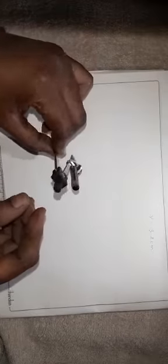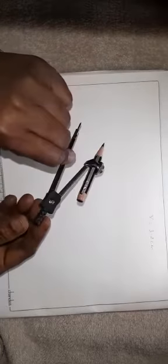Now, I am going to draw a circle. So, when you draw circle, you have to hold the compass on the top. Here you have to hold and keep it on the book. Compass point.